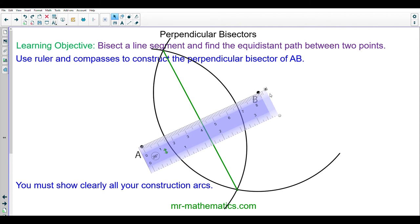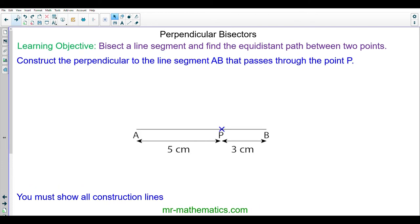Okay let's try the last question. We're going to construct the perpendicular bisector to the line segment AB that passes through point P. So do you want to try and solve this problem by pausing the video and you can resume it when you're ready.